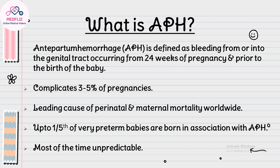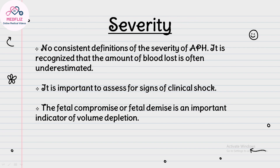APH complicates 3 to 5% of pregnancies and is a leading cause of perinatal and maternal mortality worldwide. Up to one fifth of very preterm babies are born in association with APH. Most of the time it is unpredictable. There are no consistent definitions of severity of APH, and the amount of blood lost is often underestimated.